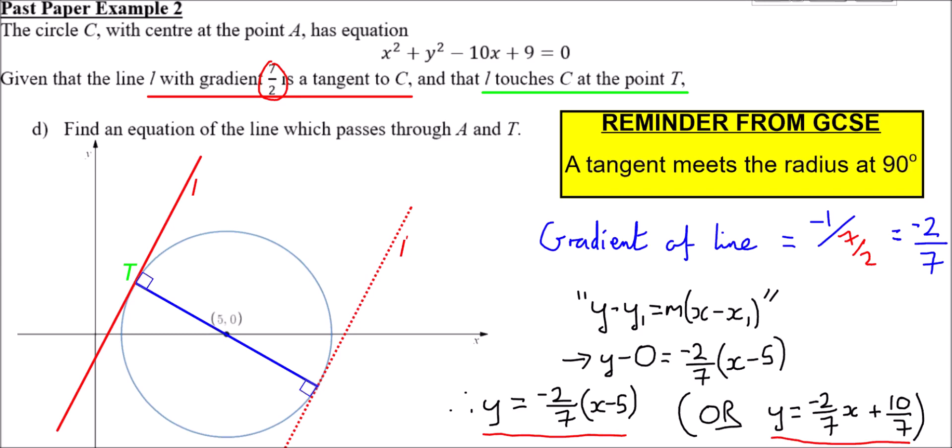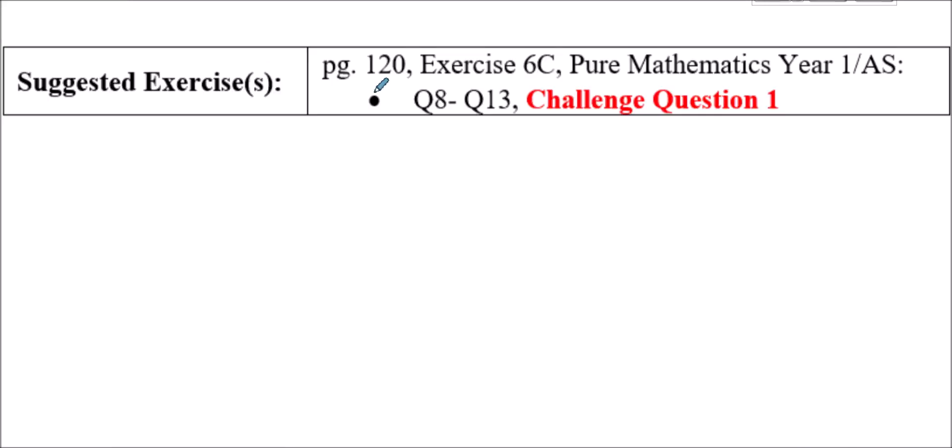That's it for the worked examples — it's now over to you. Try exercise 6C on page 120, questions 8 through to 13 and the first challenge question. Check your answers each time you finish a question. If you haven't got it right, think about why — and if you're not sure, ask a peer or ask me in class, by email, or through this YouTube channel. Keep working hard and I'll see you again soon.